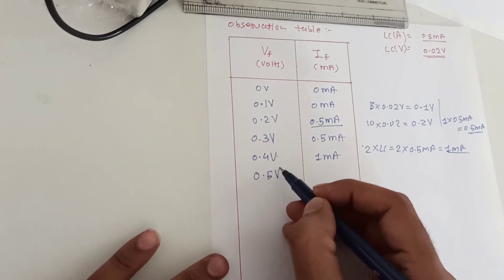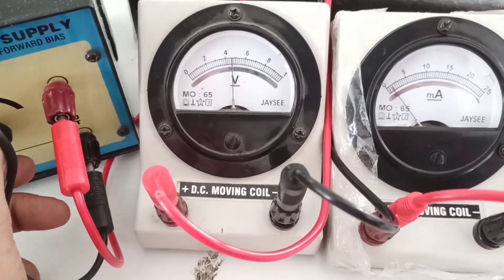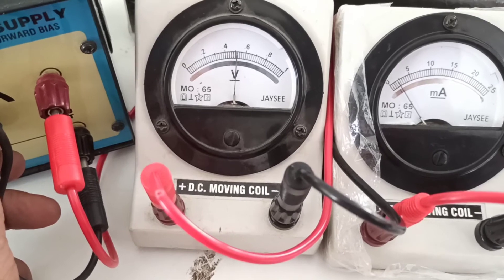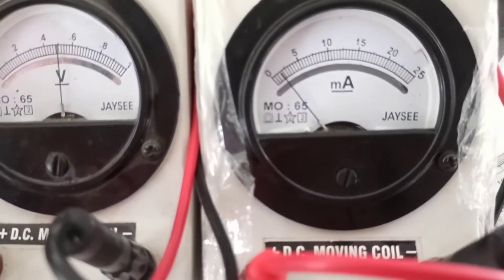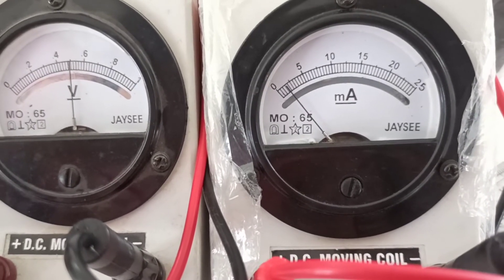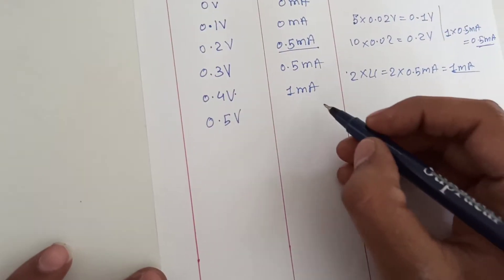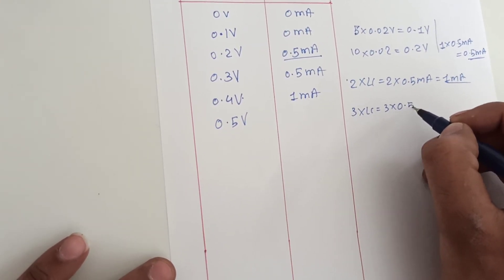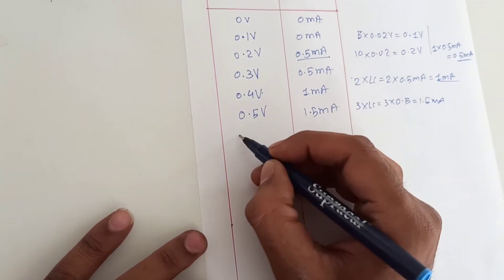Similarly, for 0.5 volt, the current is 3 divisions — 3 into 0.5 gives 1.5 mA. So for 0.5 volt: 3 into least count (0.5) gives 1.5 mA current.